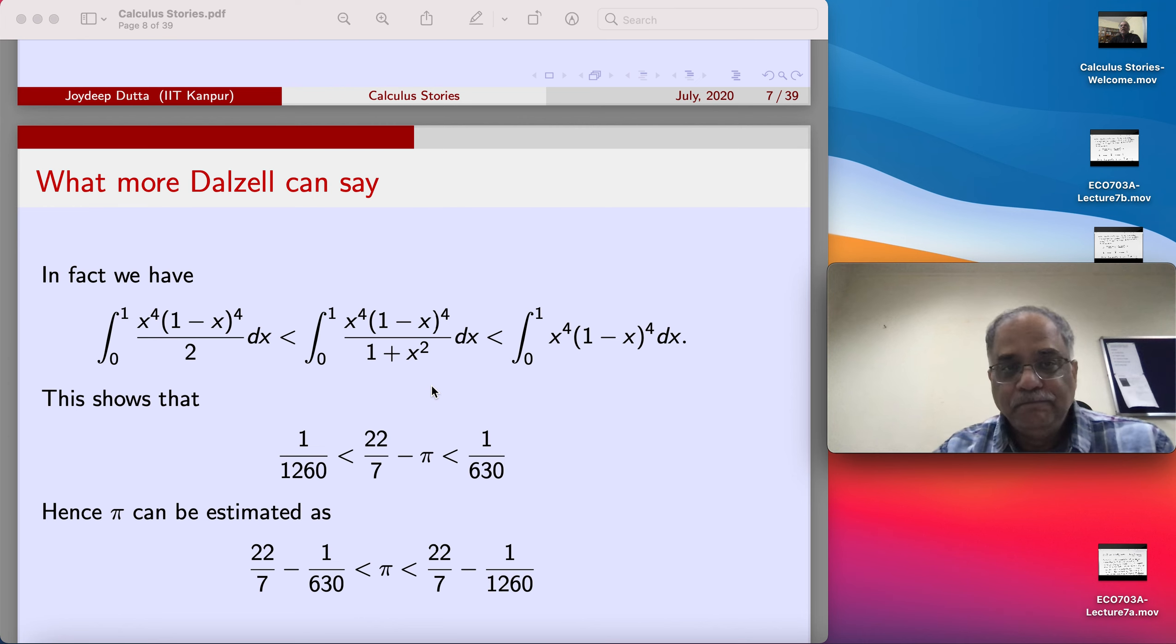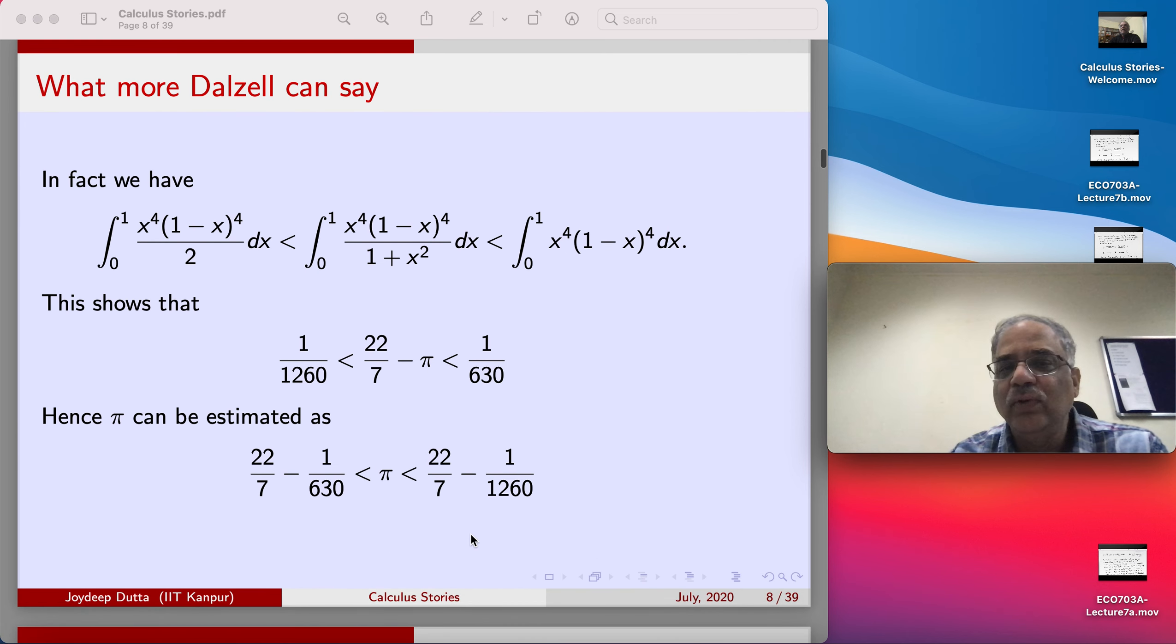And here you can understand the same thing, because 1+x^2 is bigger than 1, so 1/(1+x^2) is strictly less than 1. If you evaluate this integral, I need not tell you how to evaluate it - you will get 1/1260. And this you already know is 22/7 minus pi, and this is 1/630. This is how pi is evaluated. This is a very very beautiful answer, a very beautiful estimate of pi. You can figure it out what it would be. It will be 3.14 something, it will be 3.15 something. So pi is strictly between these two rational numbers, because these numbers are rational. You are tightly binding pi within two rational numbers.